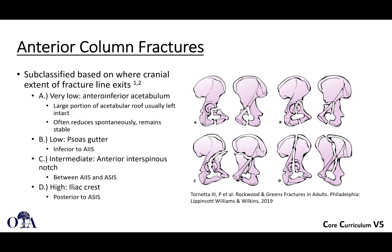Anterior column fractures are the next elementary type. These are subclassified because there's a lot of real estate with anterior column fractures — they include the whole anterior part of the iliac wing, and fractures will commonly exit up there. You have low anterior column fractures and fractures that work their way higher and higher up the iliac wing. So there are very low ones, low ones, intermediate, and then way up the iliac crest, as shown in these images.